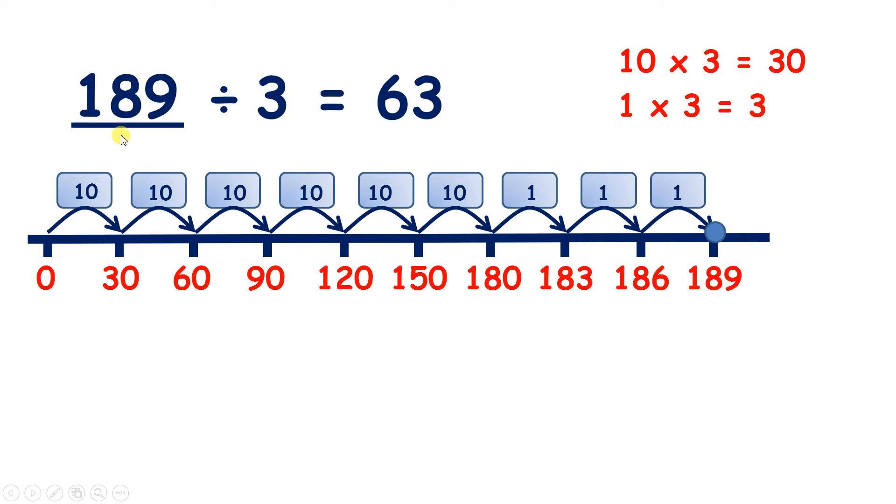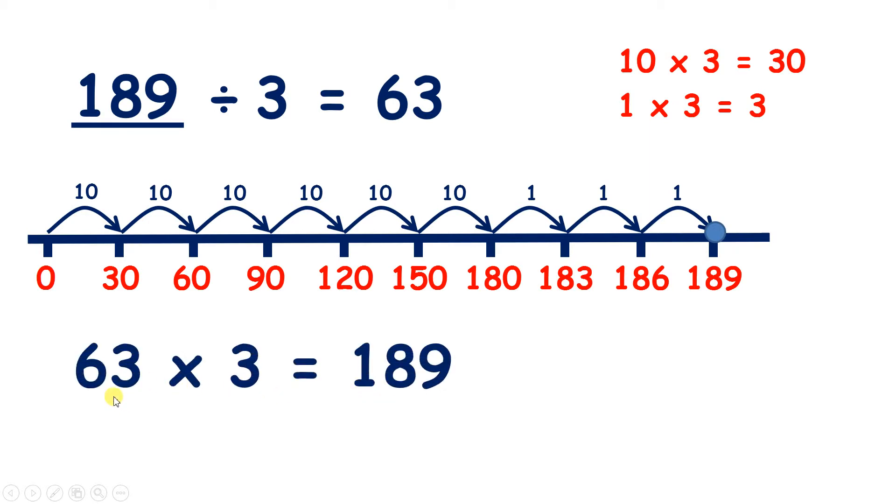So 189 divided by 3 is 63. So what we've really done is 63 times 3 to get 189.